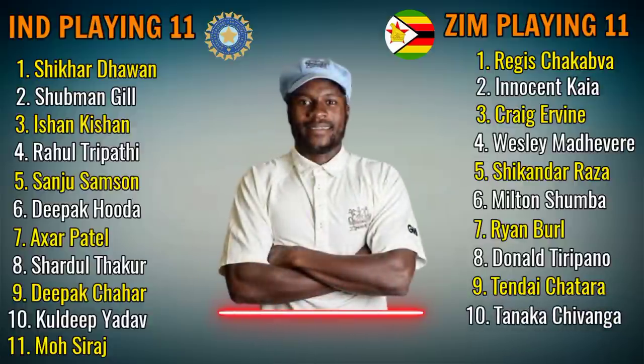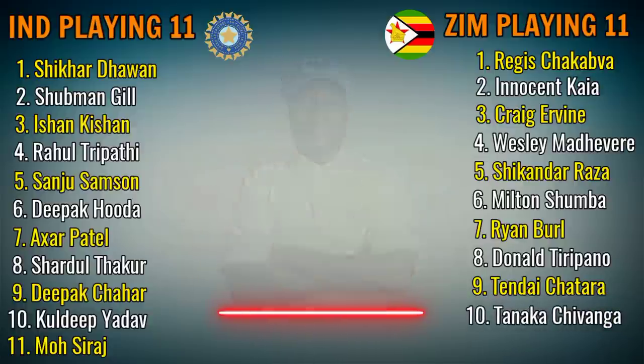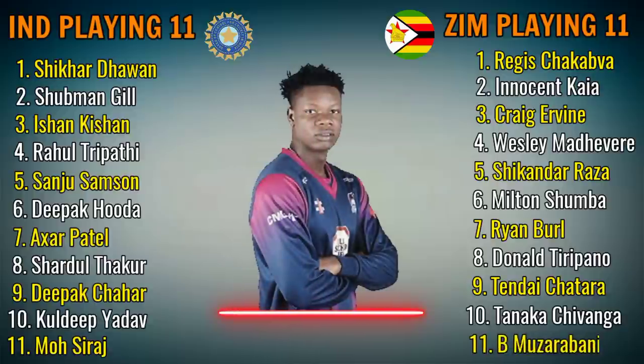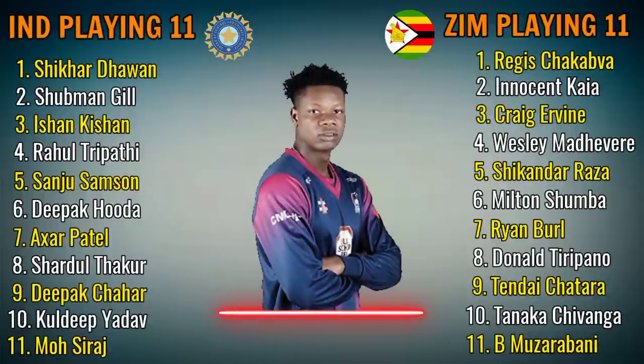Zimbabwe Team Bowlers continued: No.9 Tendai Chatara, fast bowler. No.10 Tanaka Chivanga, fast bowler. No.11 Blessing Muzarabani, fast bowler.